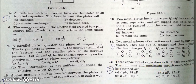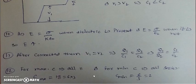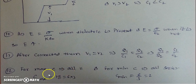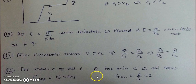The last question asks for the minimum and maximum capacitance obtainable from three 6-microfarad capacitors. To get minimum capacitance, connect them in series; to get maximum, connect them in parallel. The maximum capacitance is 18 microfarads and the minimum capacitance is 2 microfarads.